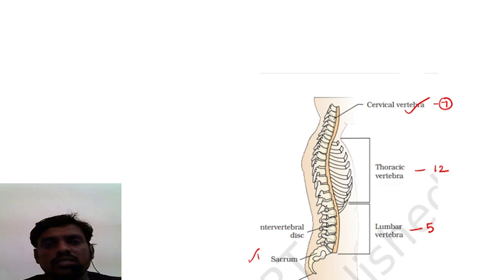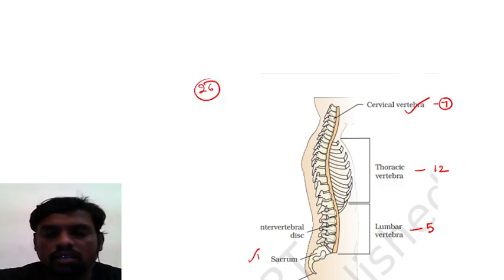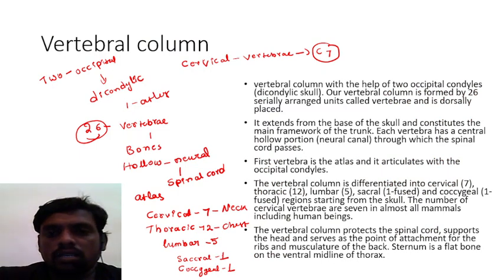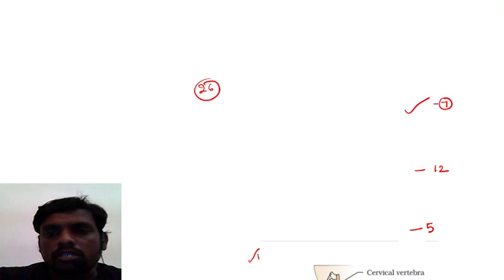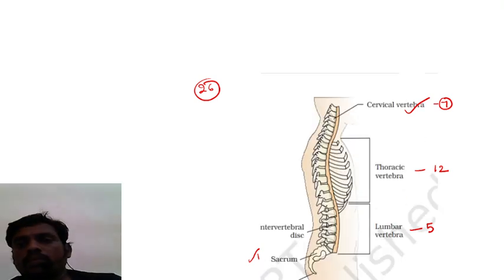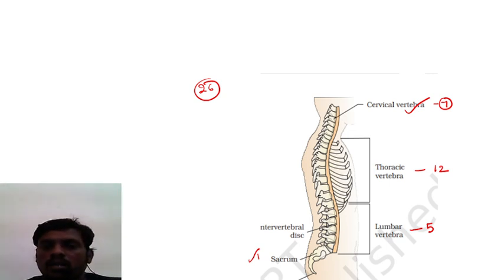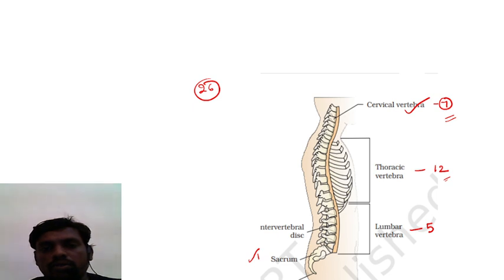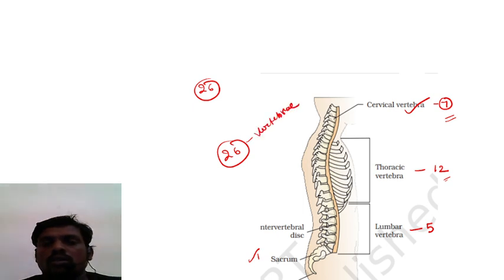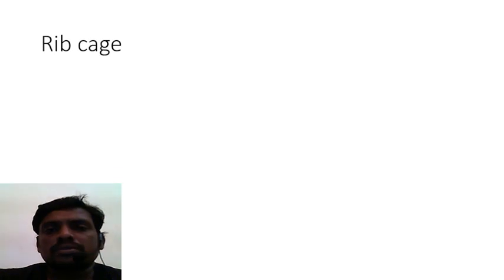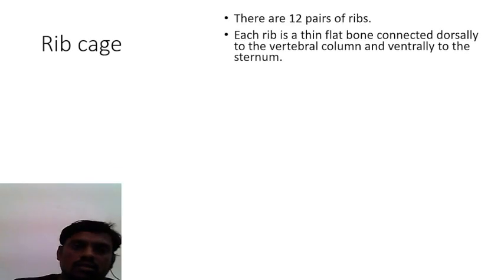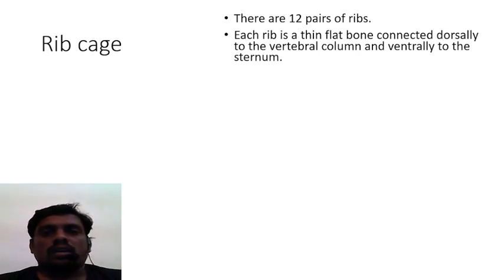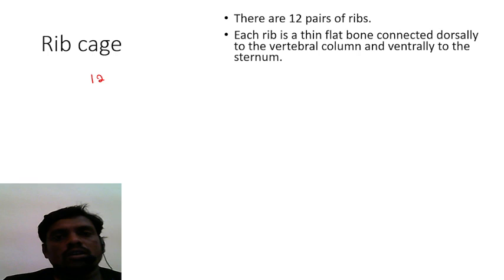In total, 26 serial vertebrae are present — these are called the vertebrae. Seven are cervical vertebrae, and together all 26 vertebrae are attached to the vertebral column. Apart from this, the last bone of the axial skeleton is the rib. A rib cage is made up of 12 pairs of rib bones.